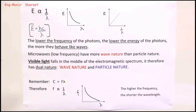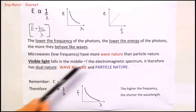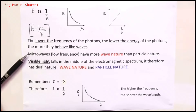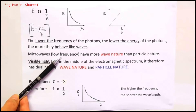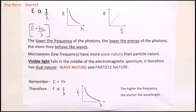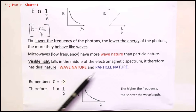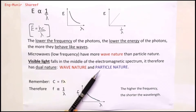The lower the frequency of the photons, the lower their energy, and they will behave more like waves. For example, microwaves have low frequency and therefore long wavelength — they have more wave nature than particle nature. Visible light falls in the middle of the electromagnetic spectrum and therefore has dual nature: both wave nature and particle nature. This is what is meant by the dual nature of light.